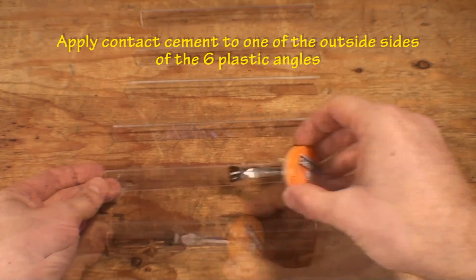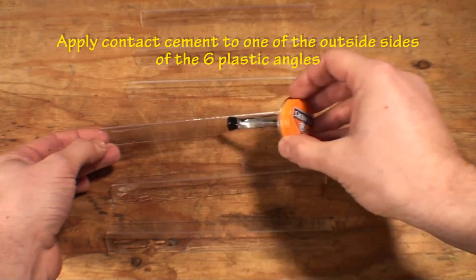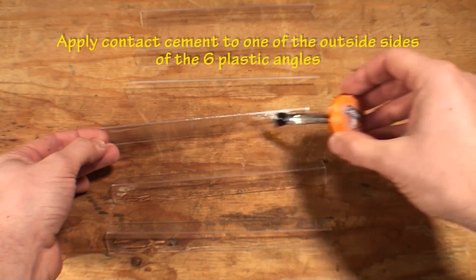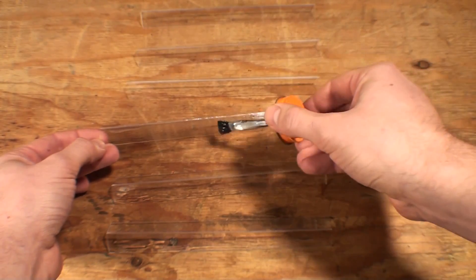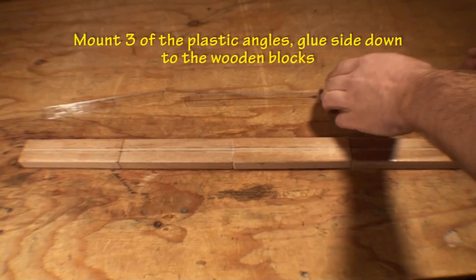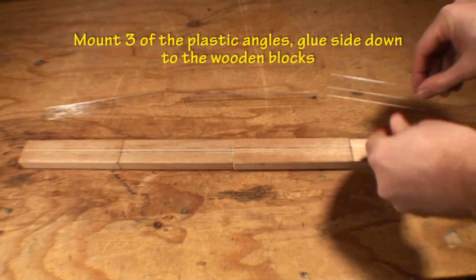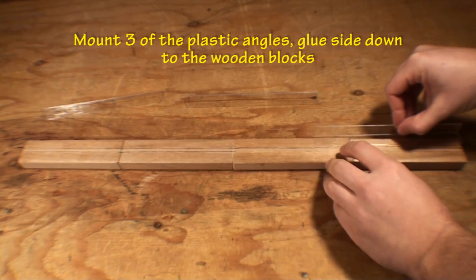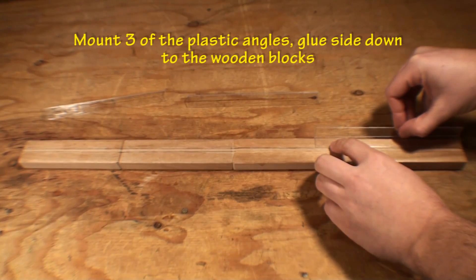contact cement to the first three plastic angles. Set aside and allow the cement to dry for ten minutes. Once everything is dry, mount the first three plastic angles to the top of the wooden blocks.